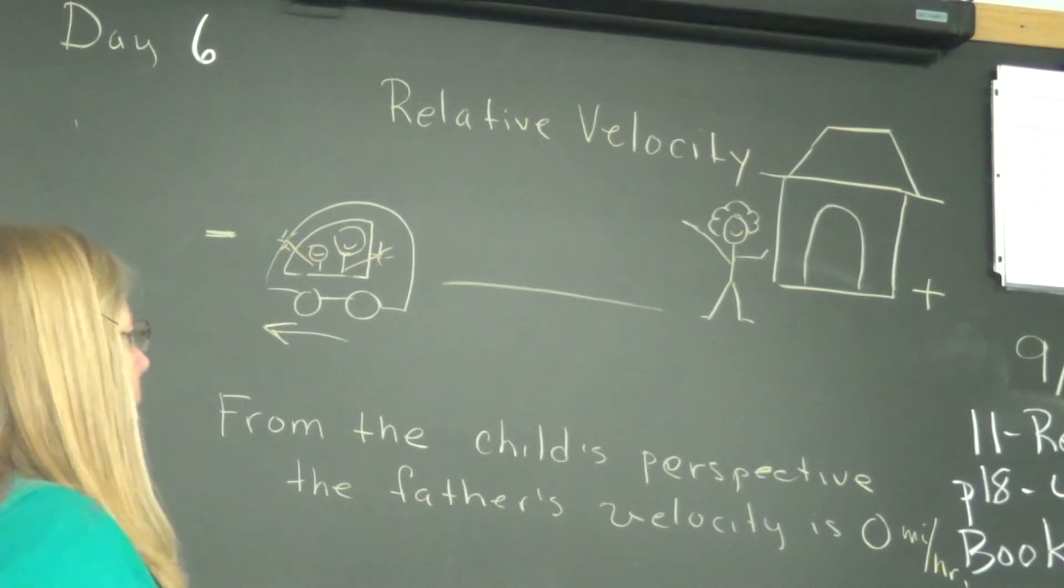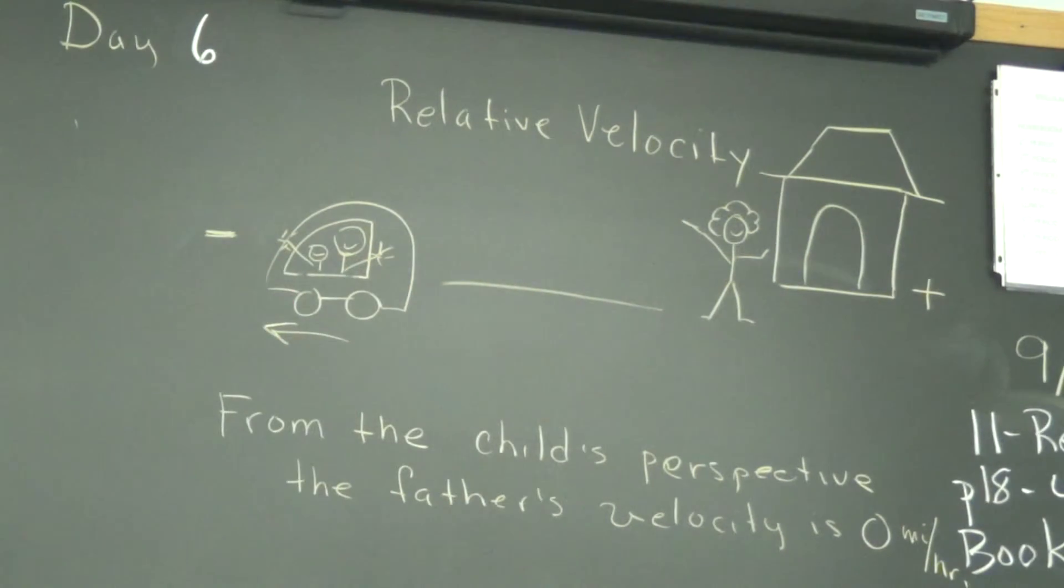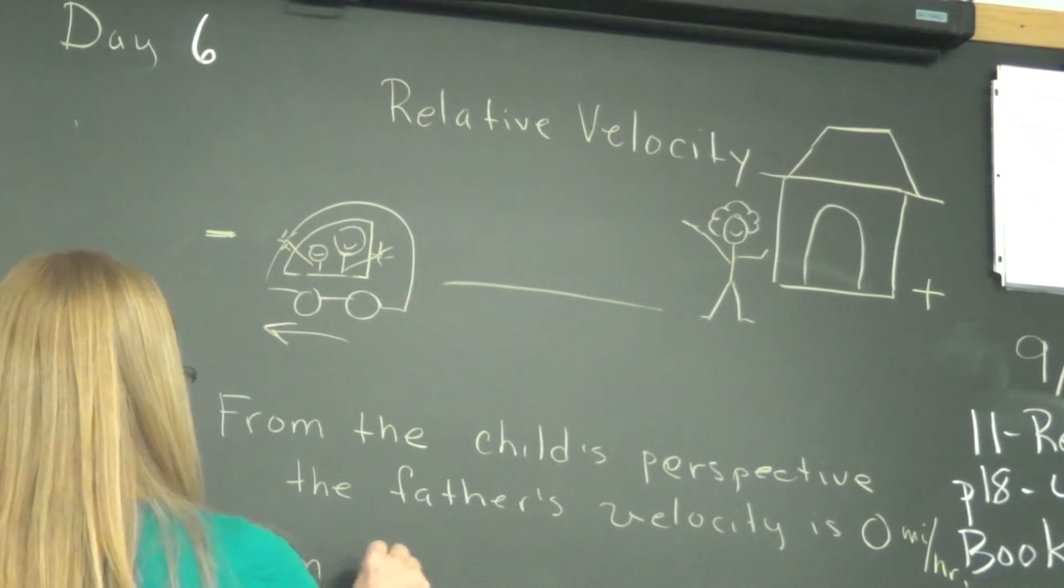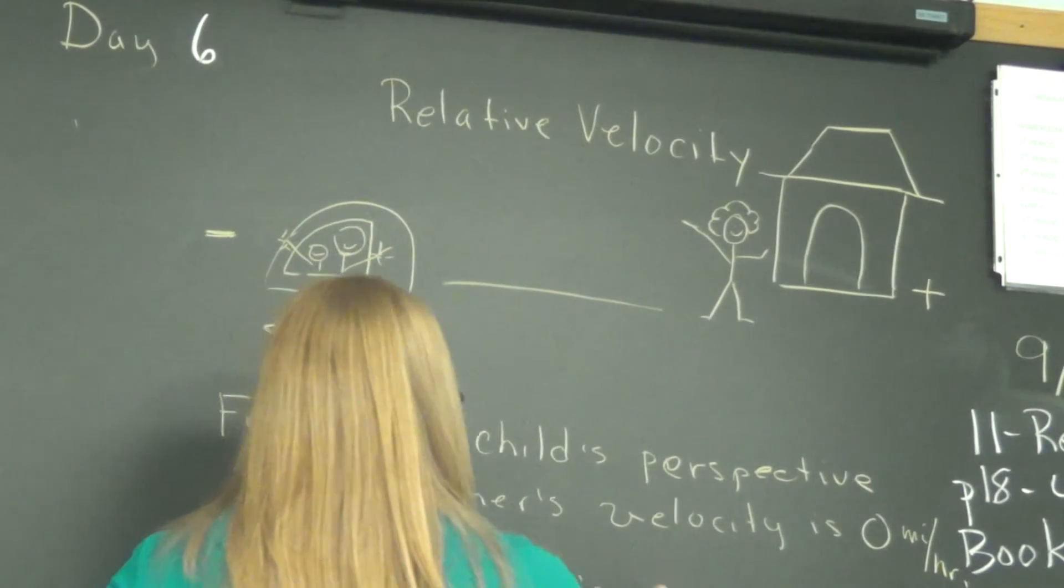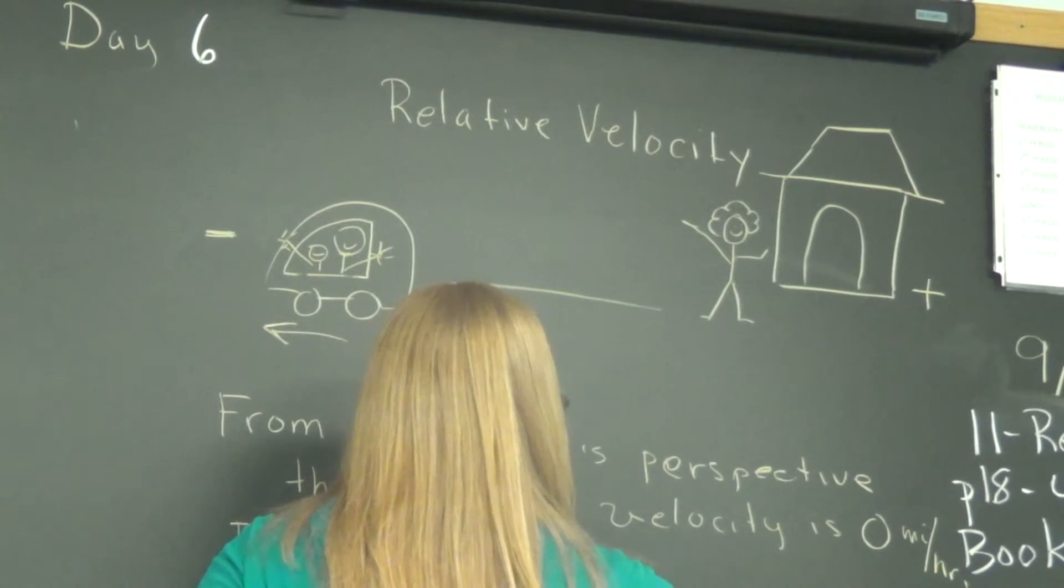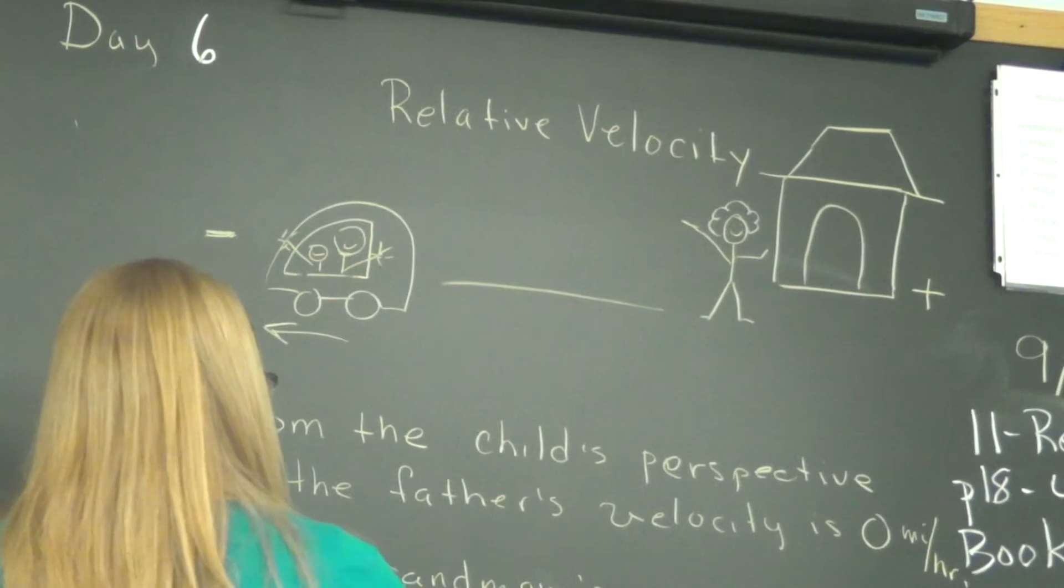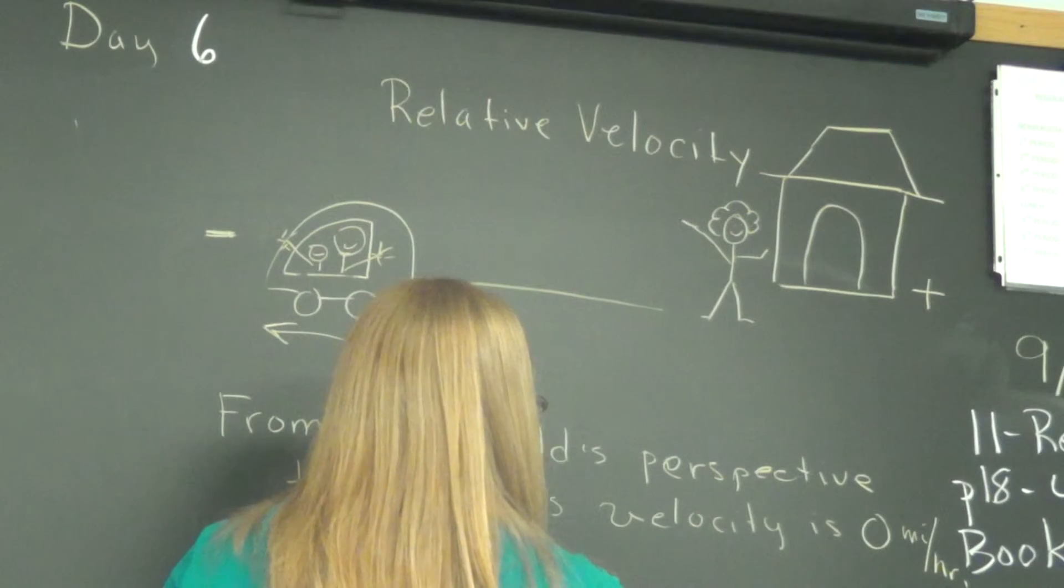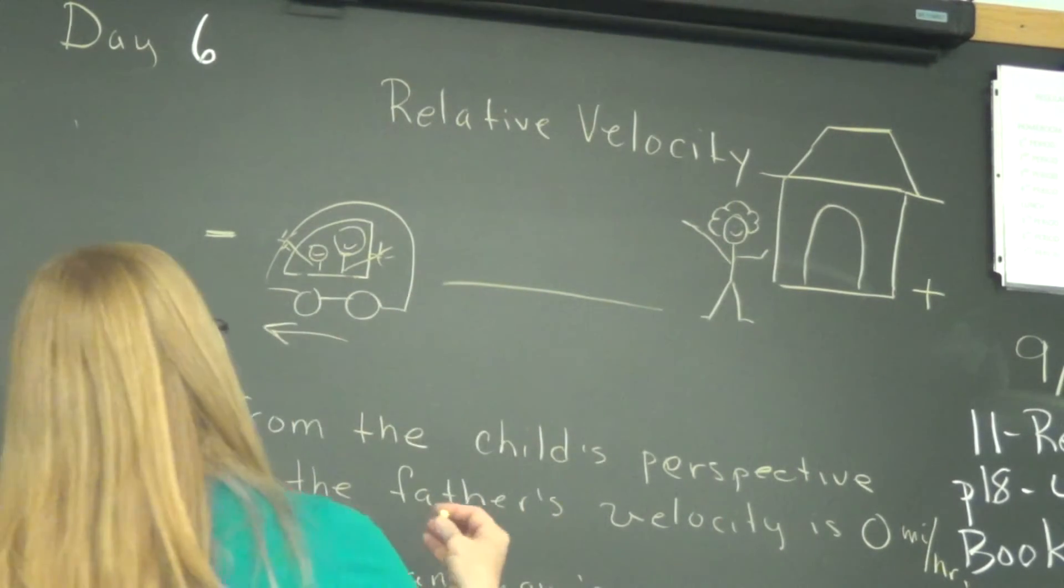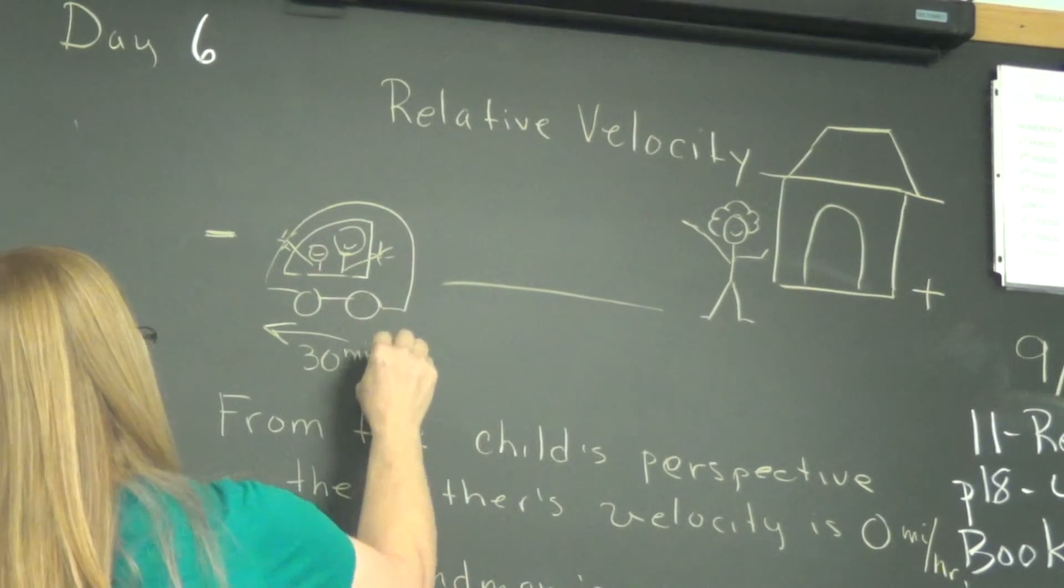Alright, now is we look from Grandmom. Grandmom is looking at father now, or parent, or father I call him. So from Grandmom's perspective, the father has a velocity. What does it look like? Let's give it, let's say that the velocity in this direction is 30 miles per hour on the speedometer.